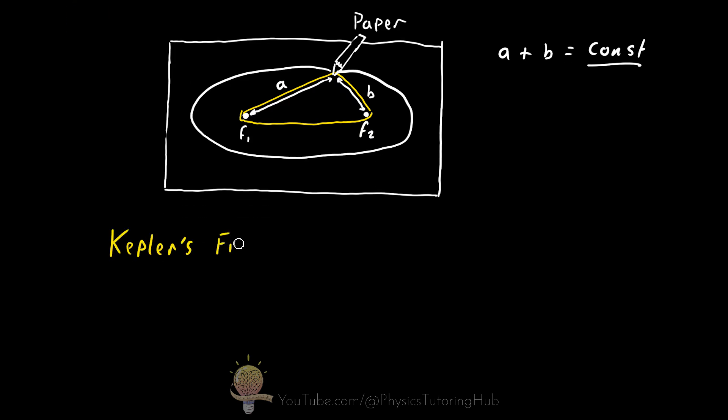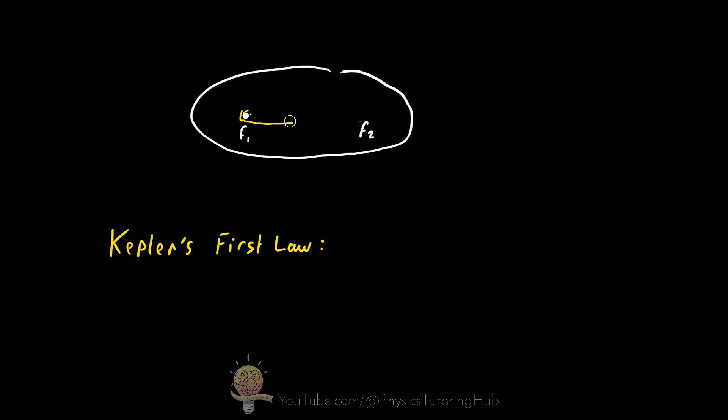So Kepler's first law states each planet travels in an elliptical orbit around the Sun, and the Sun is at one of the focal points. So let's say our Sun is at the first focal point here, and our planet is over here.